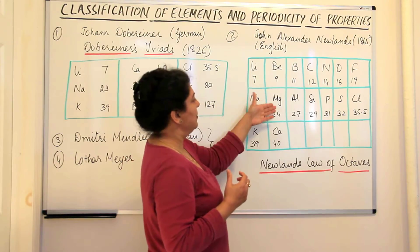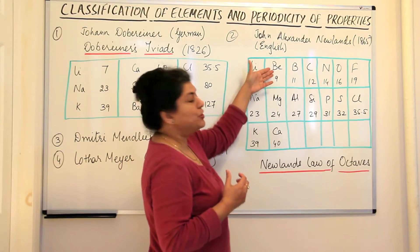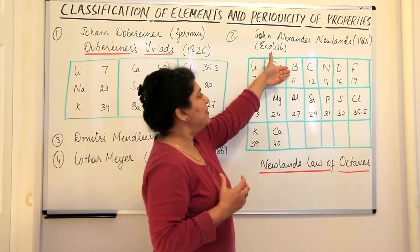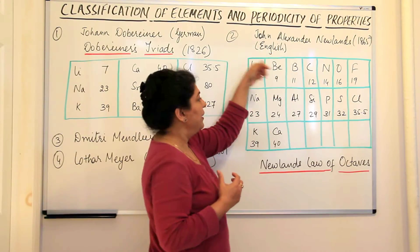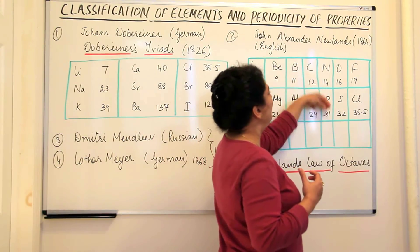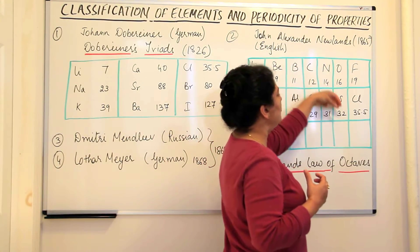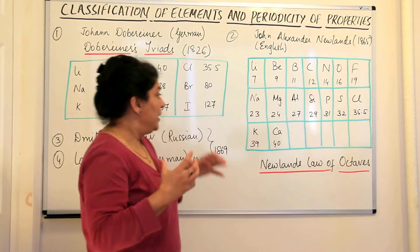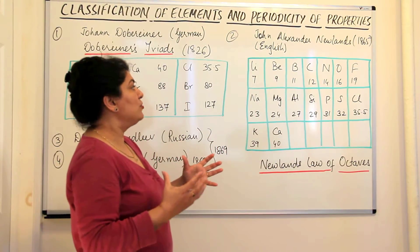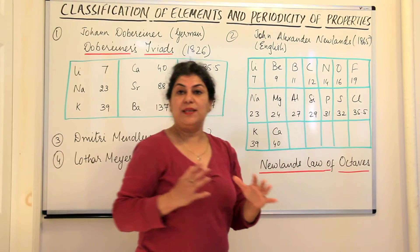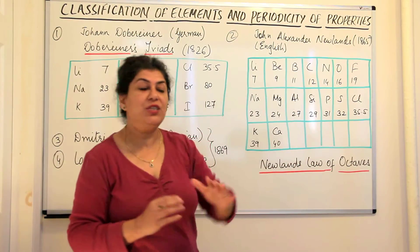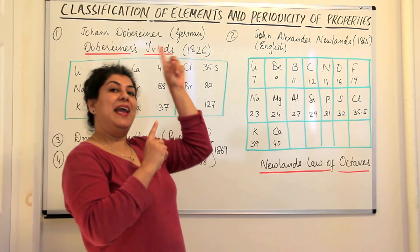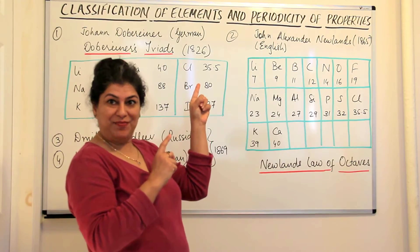Sodium was very similar to lithium. Magnesium was very similar to beryllium. Aluminum was very similar to boron. Silicon was similar to carbon, phosphorus to nitrogen, sulfur to oxygen, and chlorine to fluorine. So he found that the next eight elements had properties which were similar to the element eight steps before it.